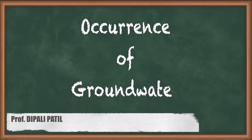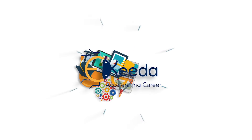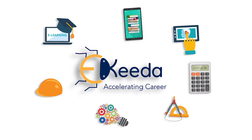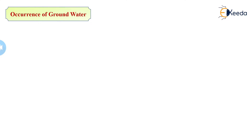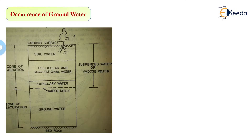Now let's see how groundwater occurs under the ground surface area. This is the diagram of groundwater occurrence.